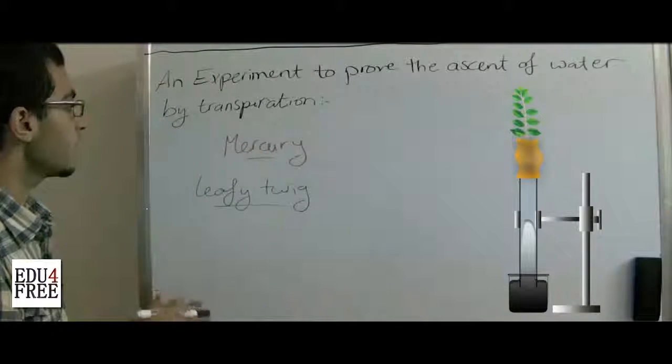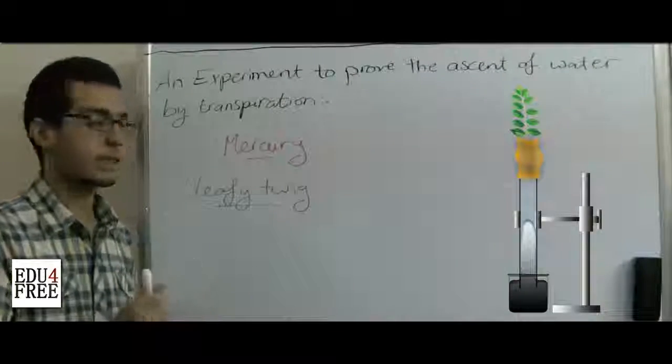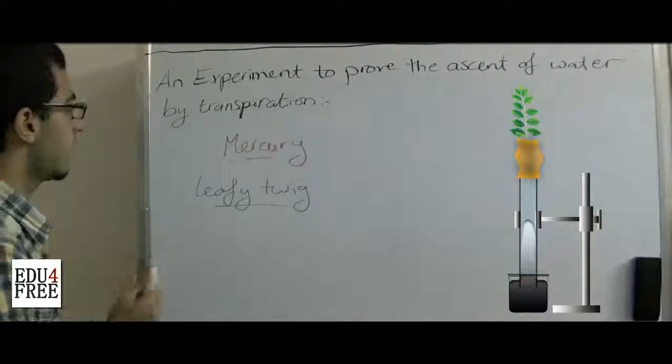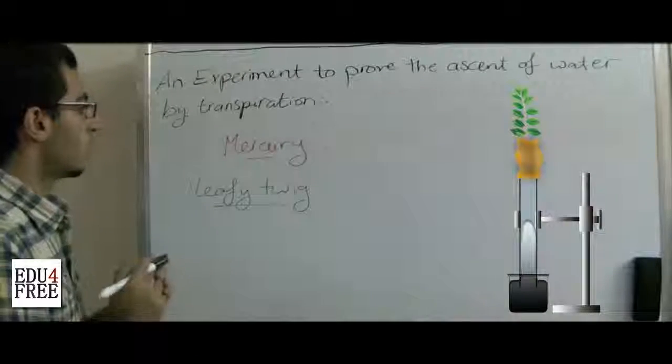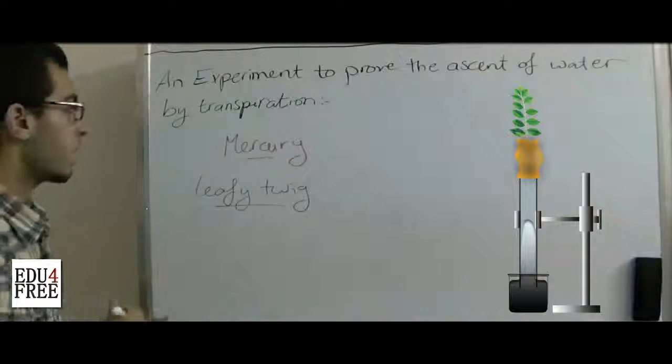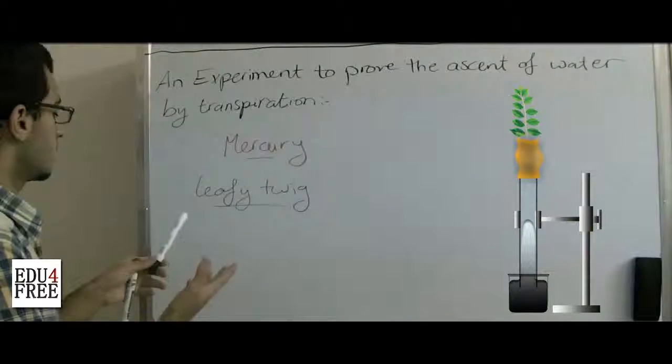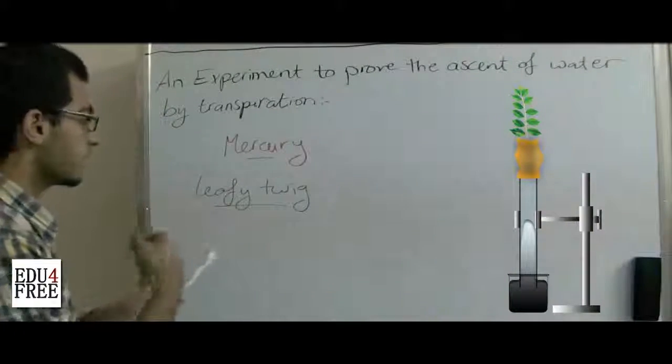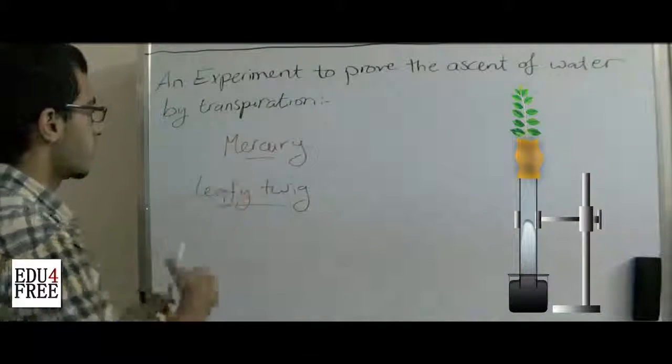The observation is that the mercury level will rise inside the tube. This indicates that the water which was found inside the tube was utilized or used by the plant. In order to compensate this loss of water, mercury rises to replace the water lost inside the tube.